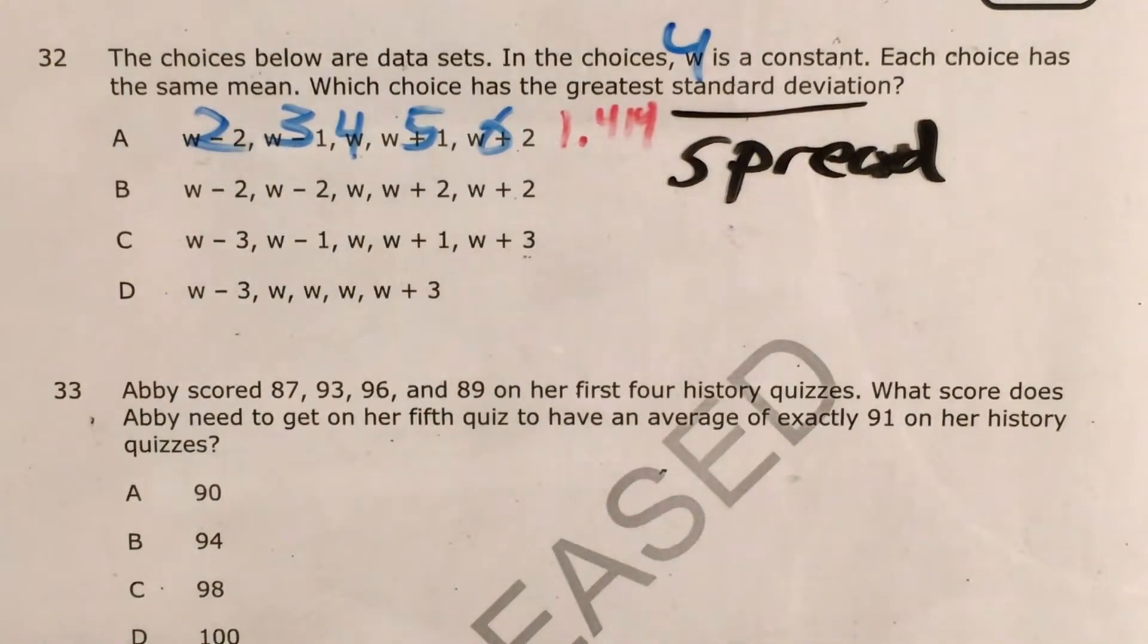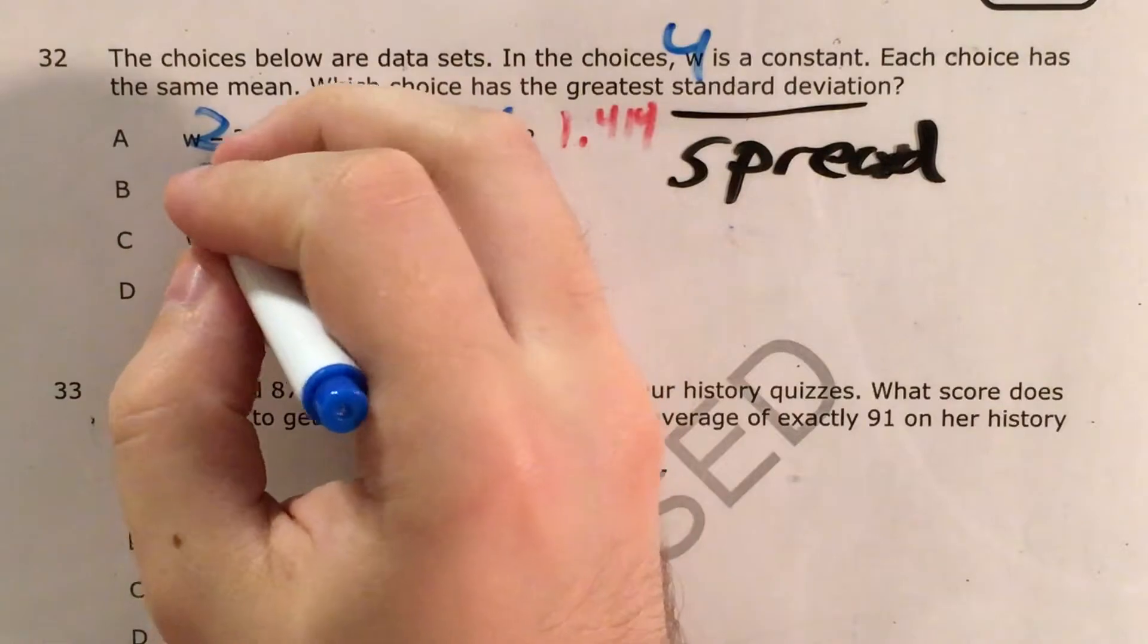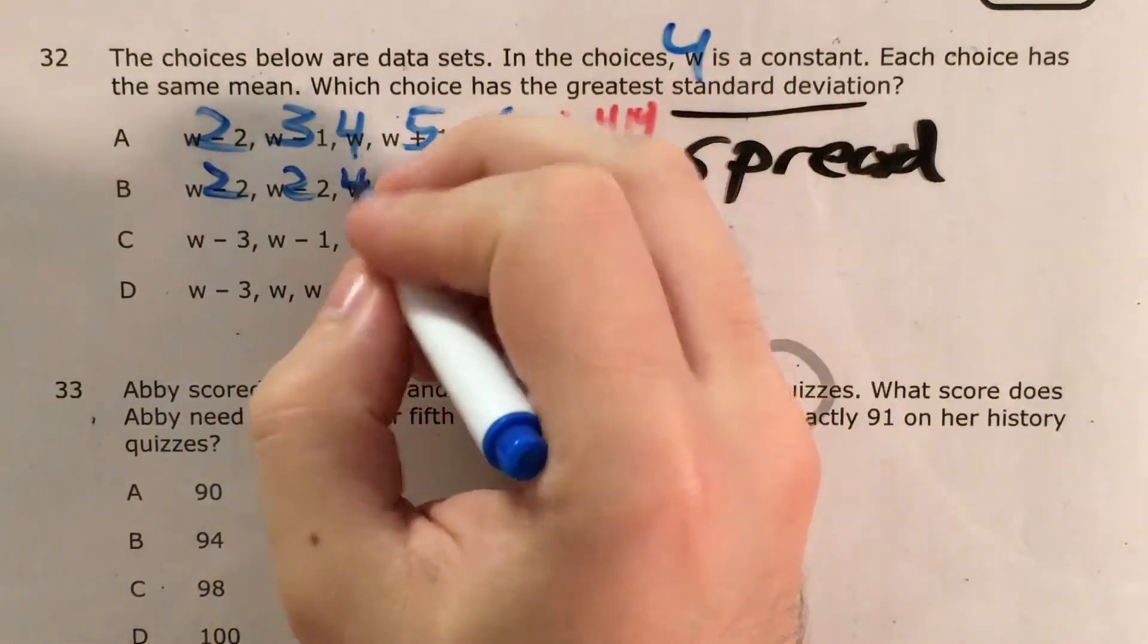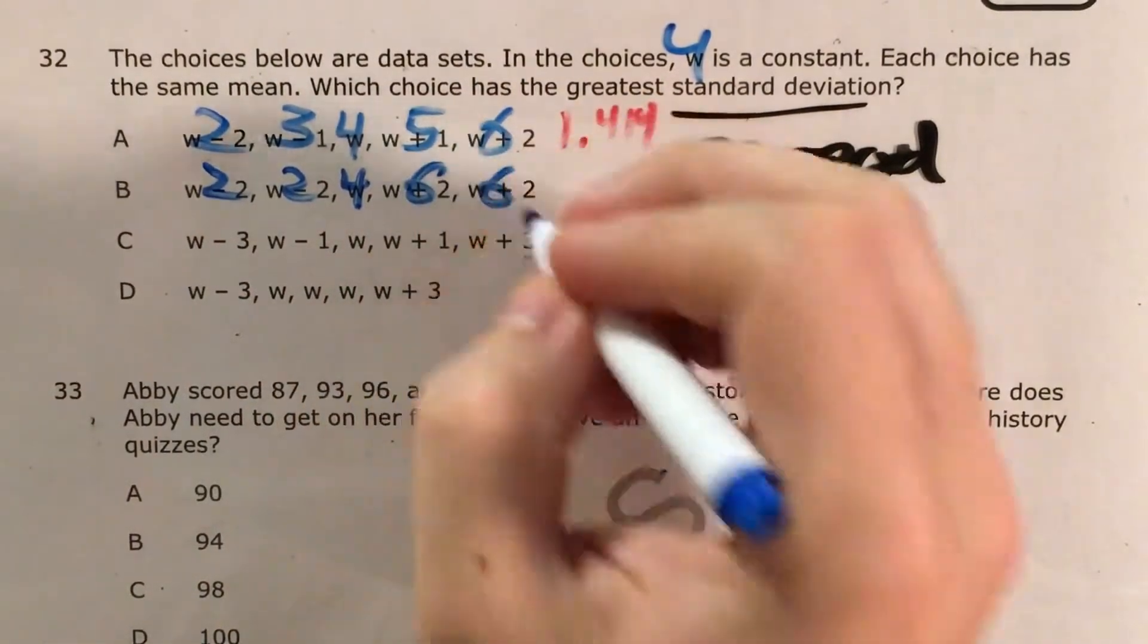So now let's test out choice B. 4 minus 2 is 2, 4 minus 2 is 2, 4 is just 4, 4 plus 2 is 6, 4 plus 2 is 6.